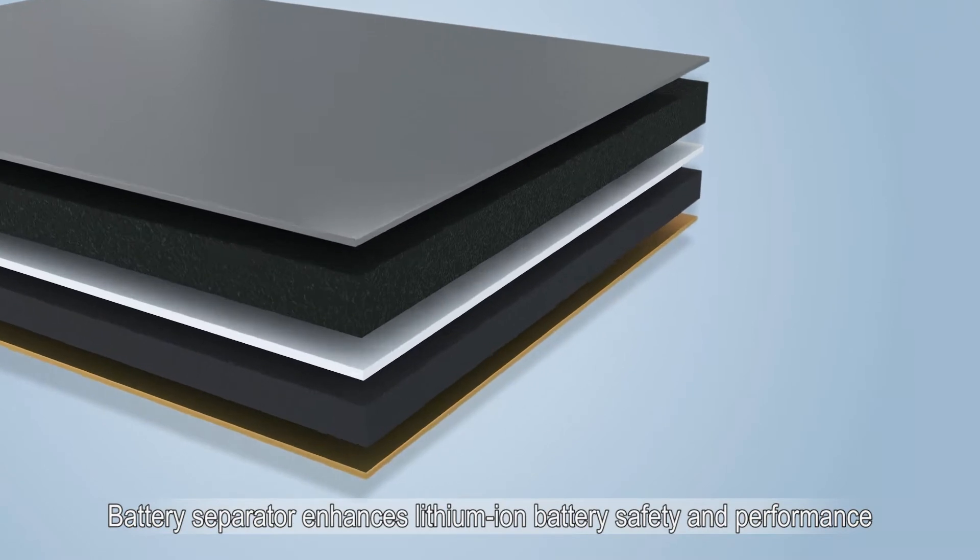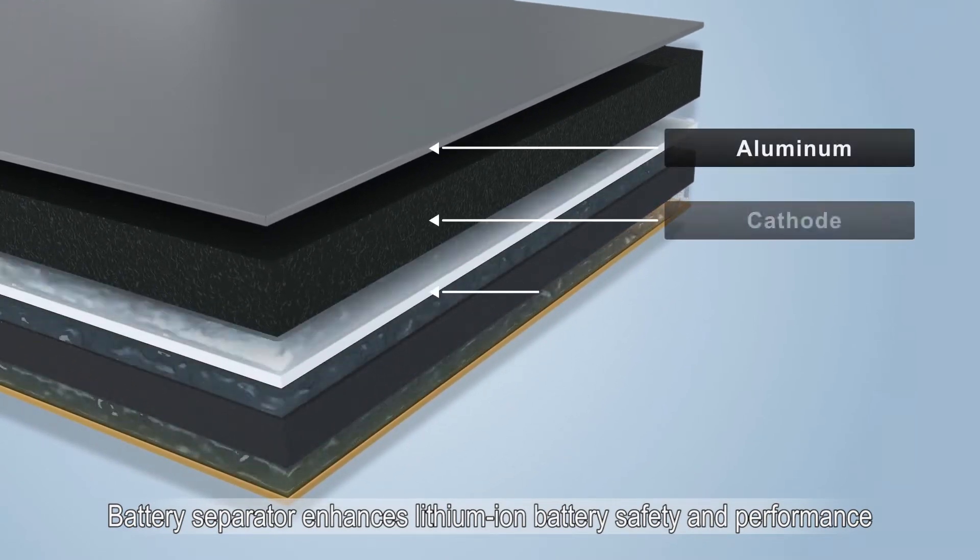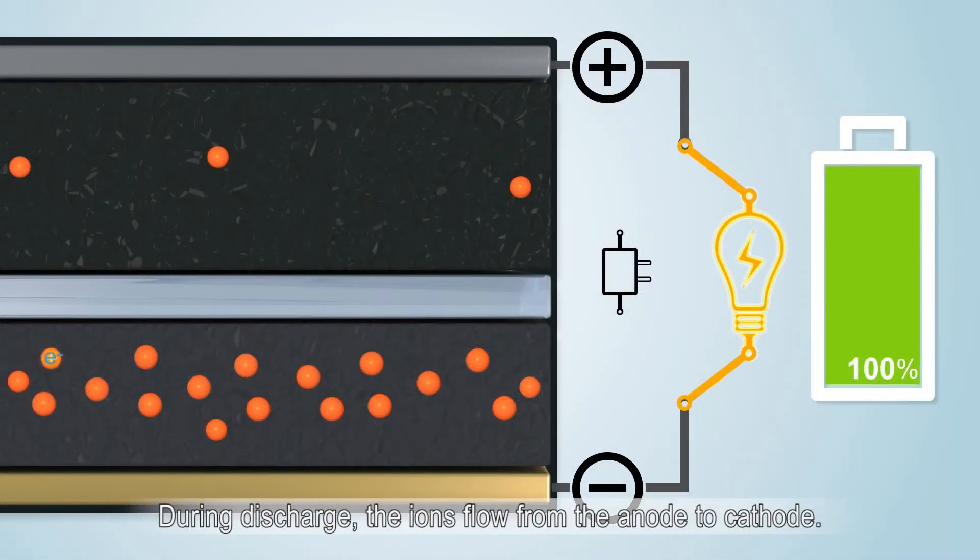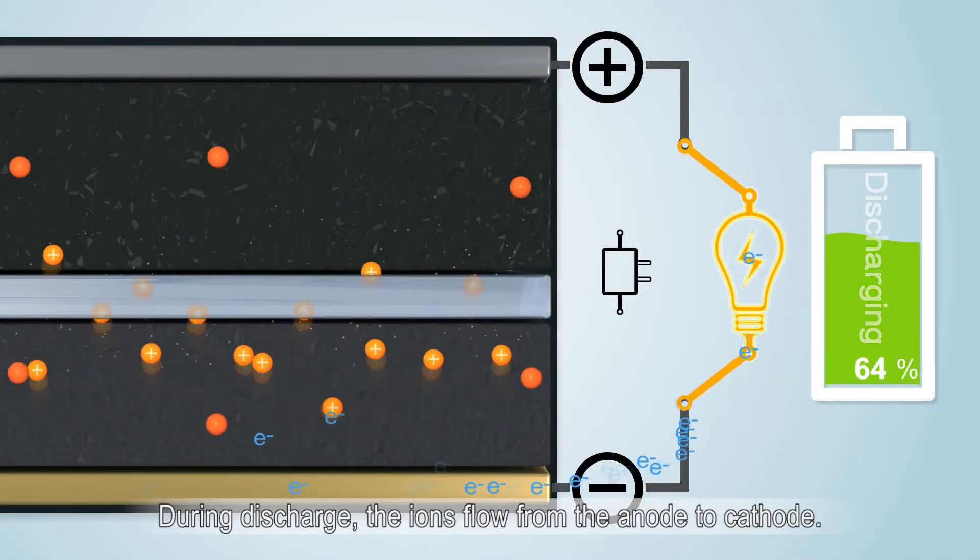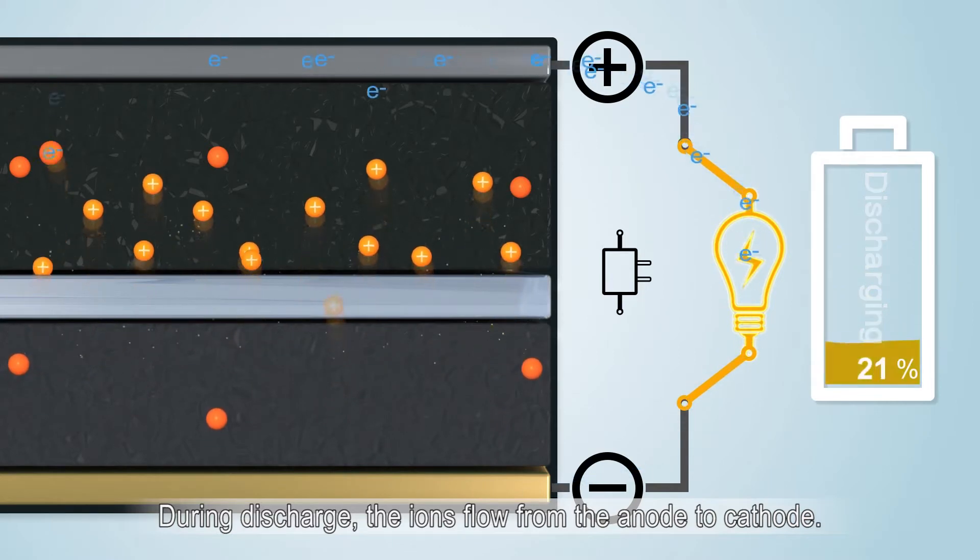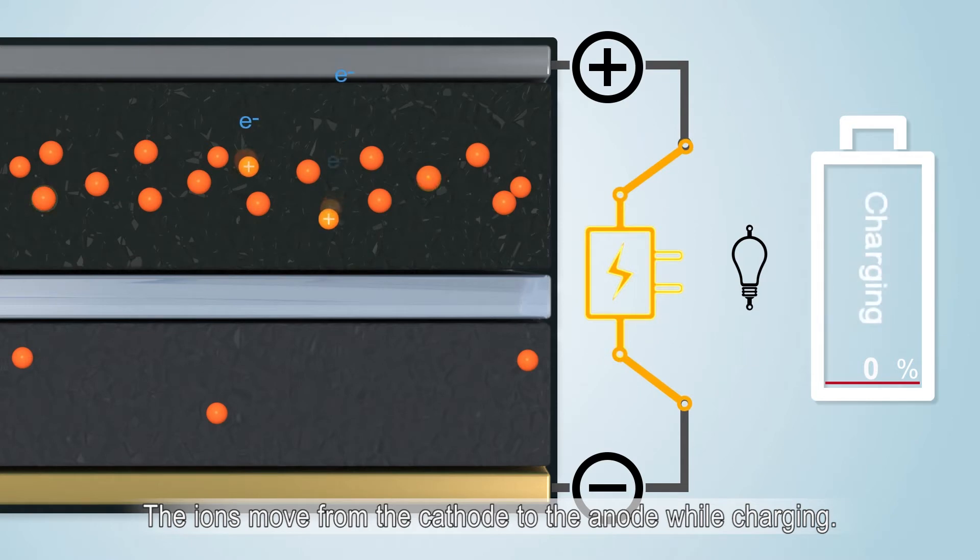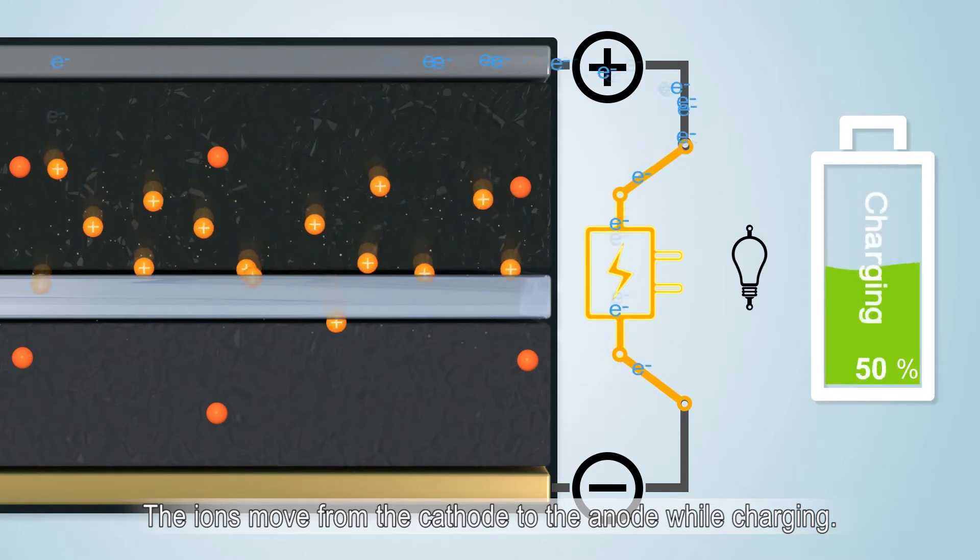The lithium-ion battery is constructed with cathode, anode, separator and electrolyte. During discharge, the ions flow from the anode to cathode through the electrolyte and separator. Charge reverses the direction and the ions flow from the cathode to the anode.